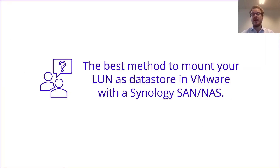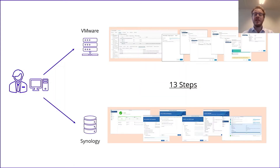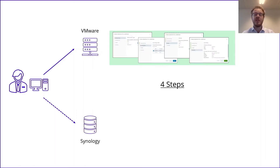The best method — after deploying your hardware — is to create a datastore, a LUN. The best method to mount your LUN as a datastore in VMware with the Synology SAN or NAS is: first deploy VMware, set up your iSCSI settings on the DSM side and within VMware, then start creating your datastore. Before, there were 13 different steps needed from both VMware and Synology sides, but we have optimized the process into only four steps.